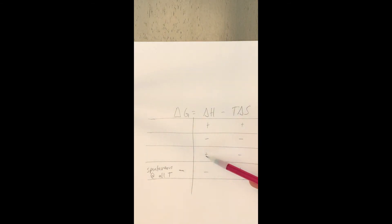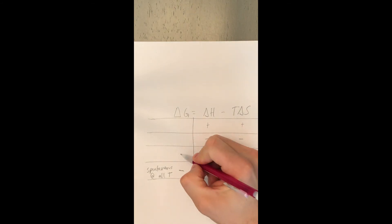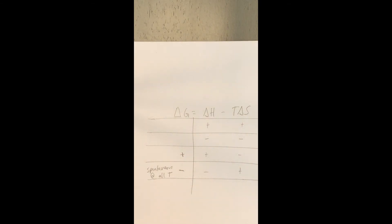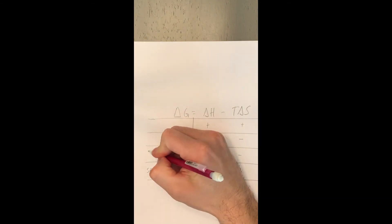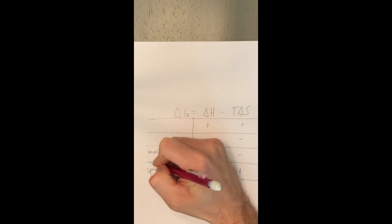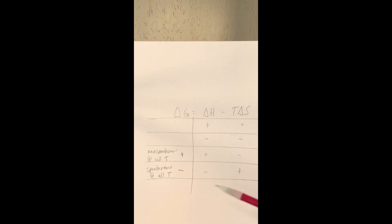Going one up: if delta S is a negative value, the entropy term becomes positive. If the entropy term is positive, then you have a positive plus a positive — that's always going to make delta G a positive value. When delta G is positive, we know that it's non-spontaneous. We would say non-spontaneous at all temperatures, because a positive plus a positive is always going to be positive.